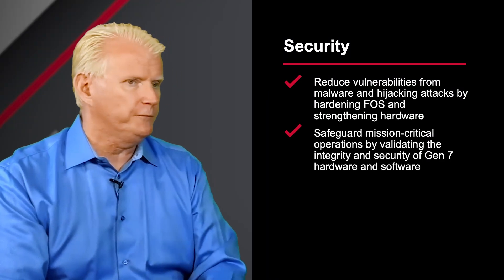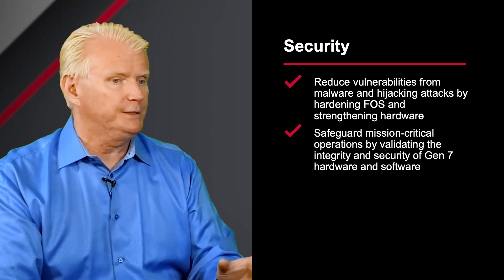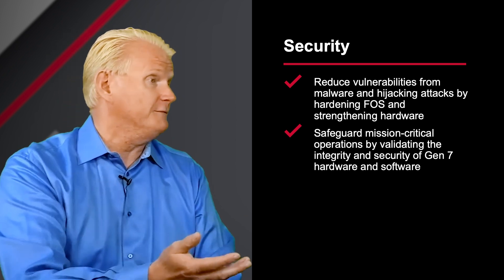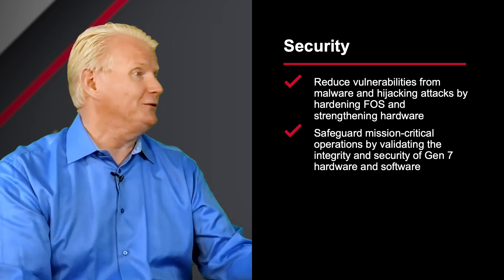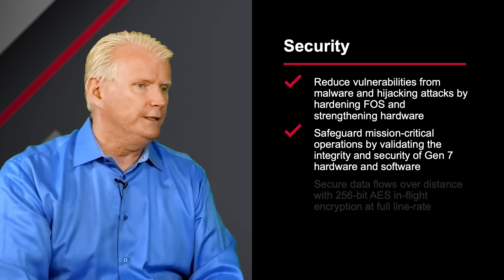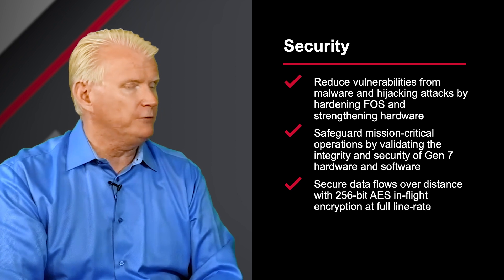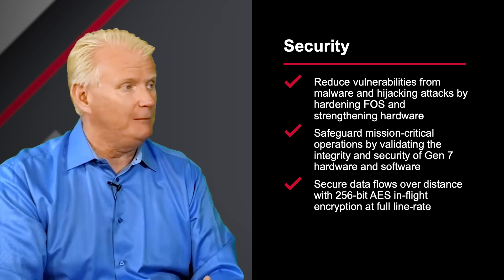We also do full root of trust for the hardware and for the software to make sure the hardware isn't modified and that nobody's modified the software — key to ensuring you're running the real thing. In addition to that, we provide encryption at full line rate in the platform. That is done with a dedicated FPGA complex, not with a general purpose processor. You can run at full line rate with no performance impact, which means you can always have encryption turned on. You do not have physical control over the long-distance connection when running replication across the country or intercontinental, and we can provide full performance with encryption turned on with no performance penalty.